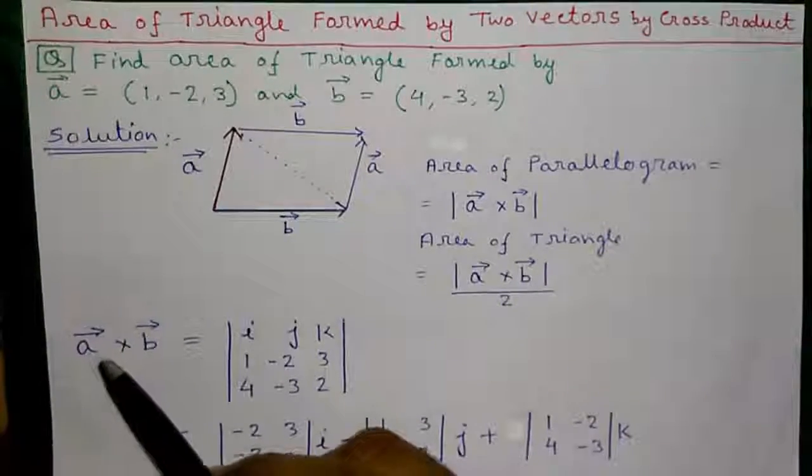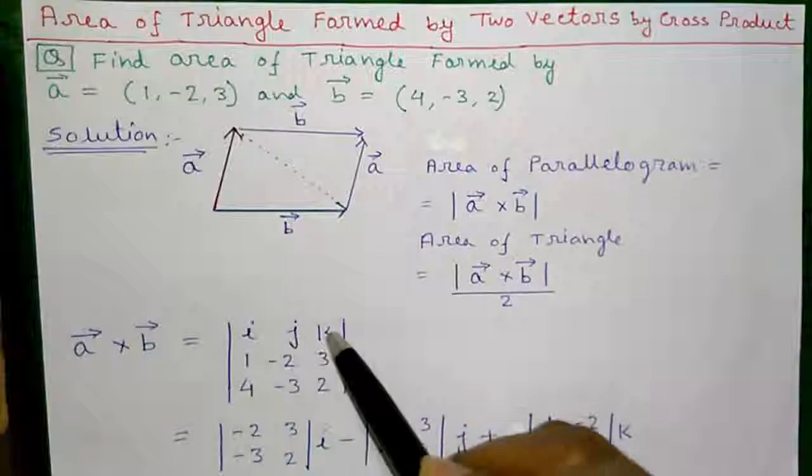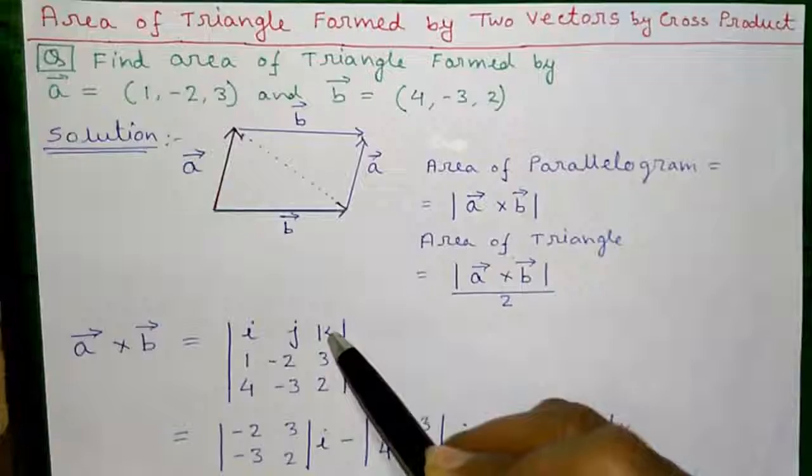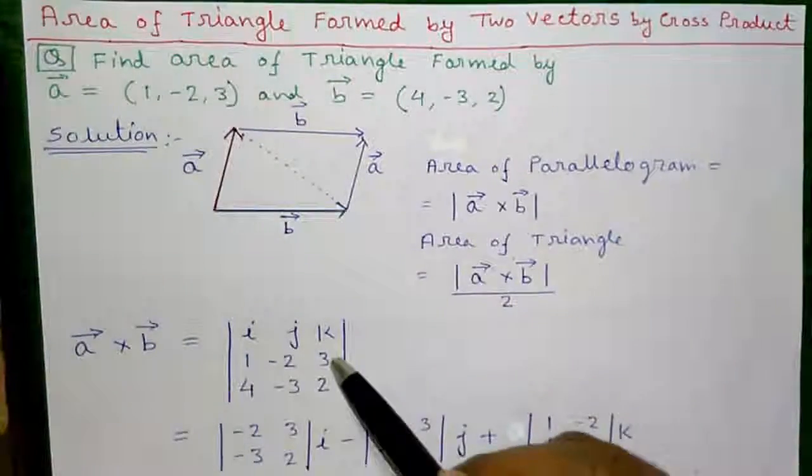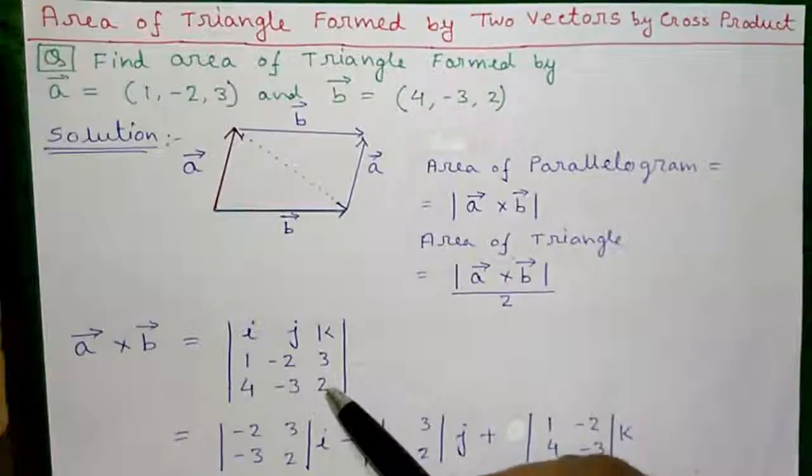So let's find A cross B which is given by, let's write I, J and K. Then write vector A 1, -2, 3, 1, -2, 3 and vector B 4, -3, 2, 4, -3, 2.